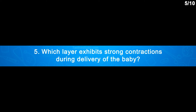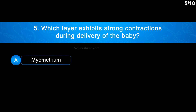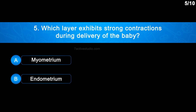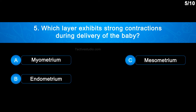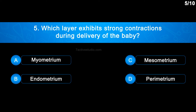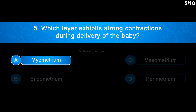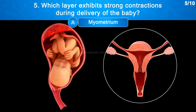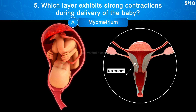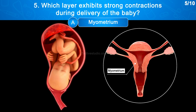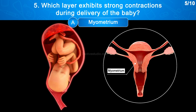Question No. 5: Which layer exhibits strong contractions during delivery of the baby? Option A: Myometrium, Option B: Endometrium, Option C: Mesometrium, Option D: Perimetrium. The correct answer is Option A: Myometrium. During labour and delivery, the myometrium, which is made up of a thick layer of smooth muscles, exhibits intense contractions.